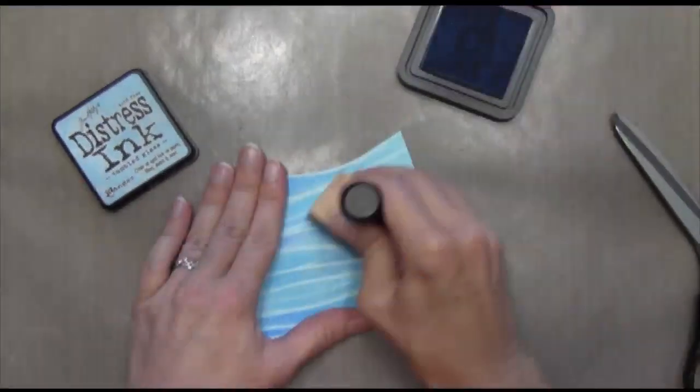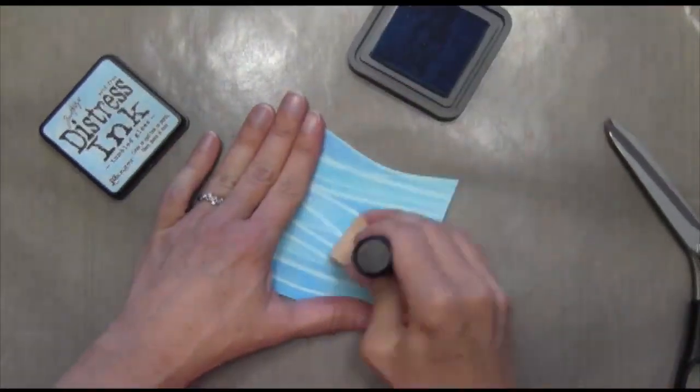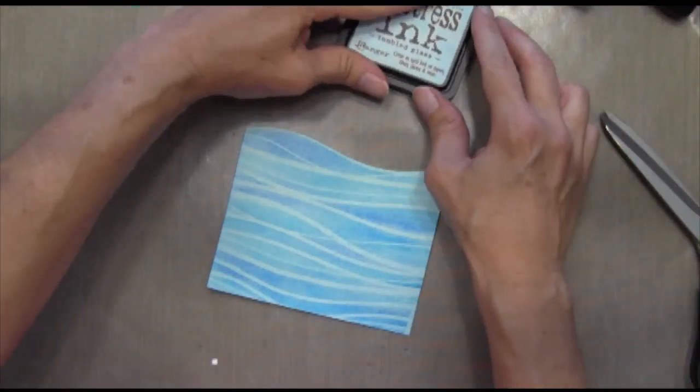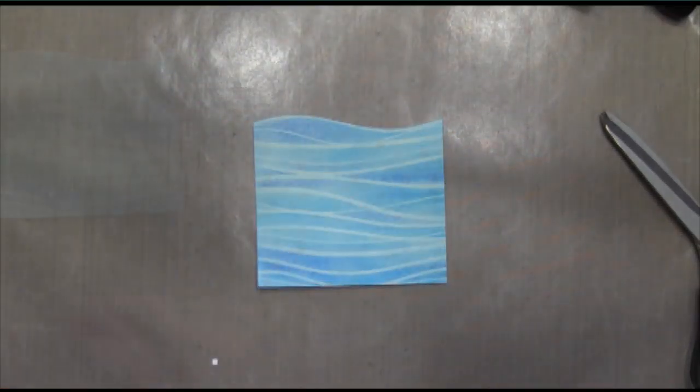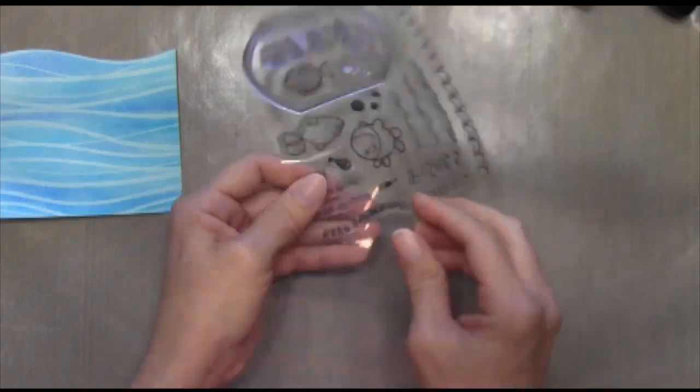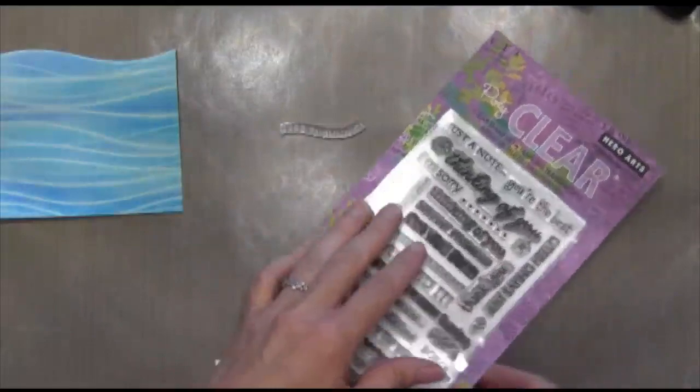So I'm taking some tumbled glass and I'm going to just apply ink so that those white lines are just a little bit more faded into blue. And the watercolor paper actually absorbs the Distress ink really well. So if you're a beginner and you're trying to get your ink blending skills down, then I would use watercolor paper because you don't tend to get the blocks when you put the applicator on the paper.